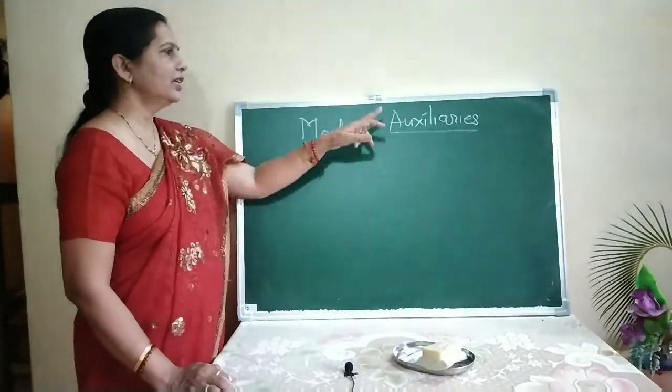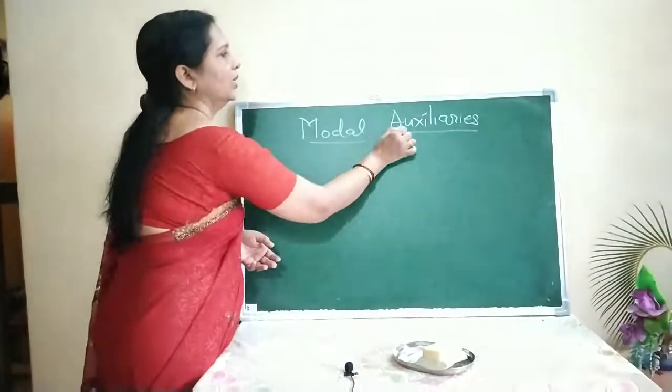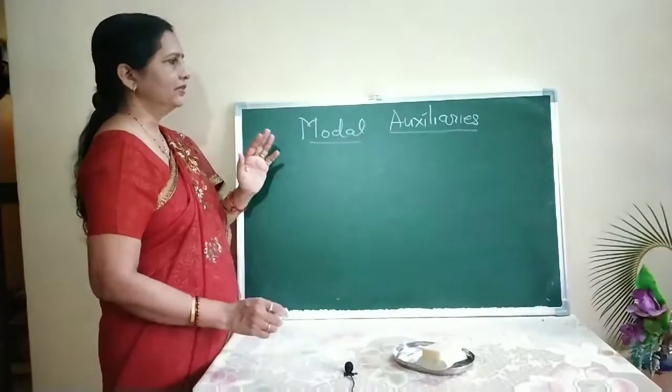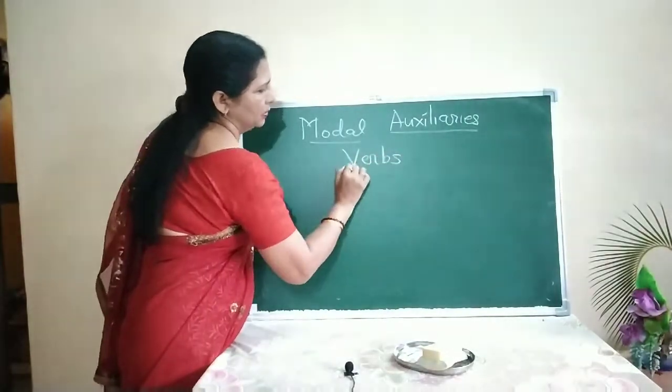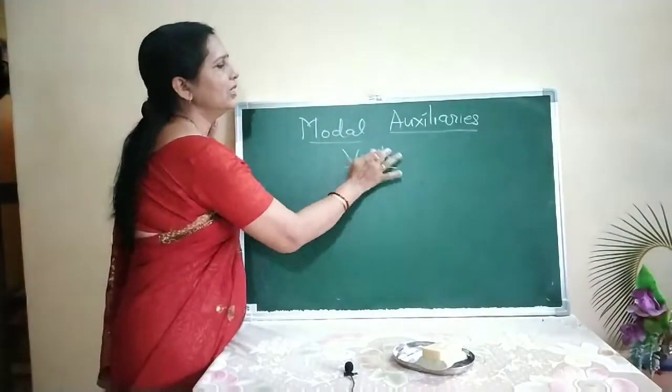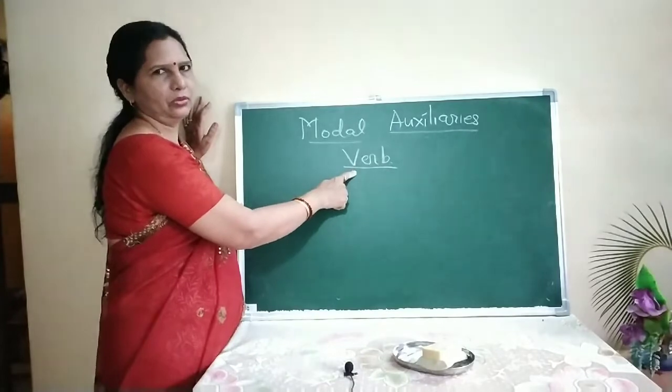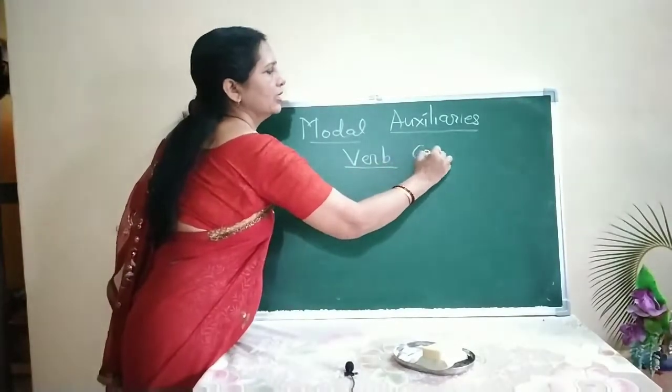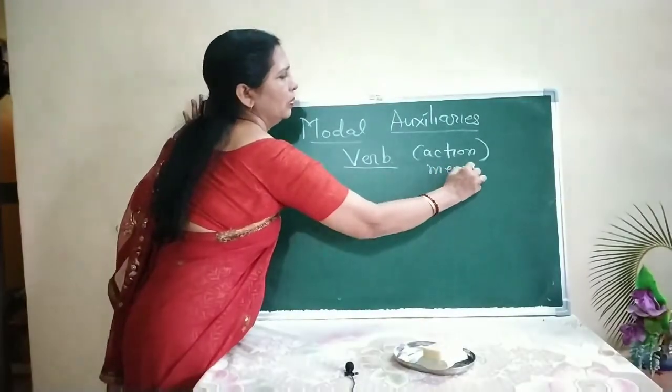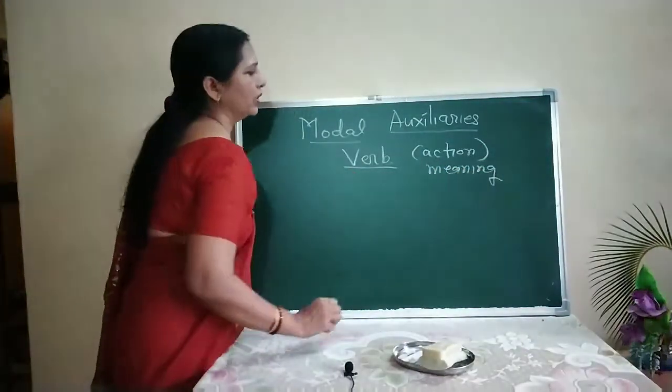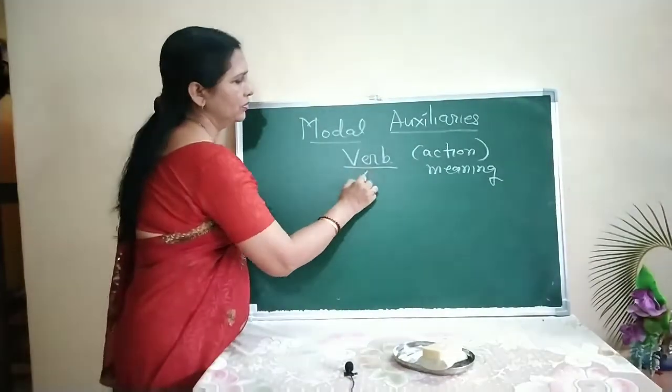But before I turn to this, I should clear what are the auxiliary verbs. First we should know the verbs. Now what is a verb? A verb shows action and completes the meaning of the sentence. It gives proper meaning to the sentence. We call it a verb. Now these verbs are of two types.